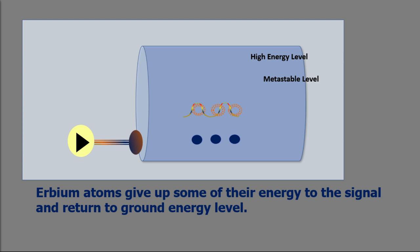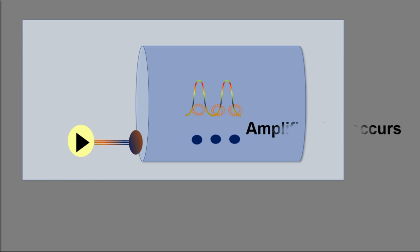A significant point is that the erbium gives up its energy in the form of additional photons which are exactly in the same phase and direction as the signal being amplified. So the signal is amplified along its direction of travel.